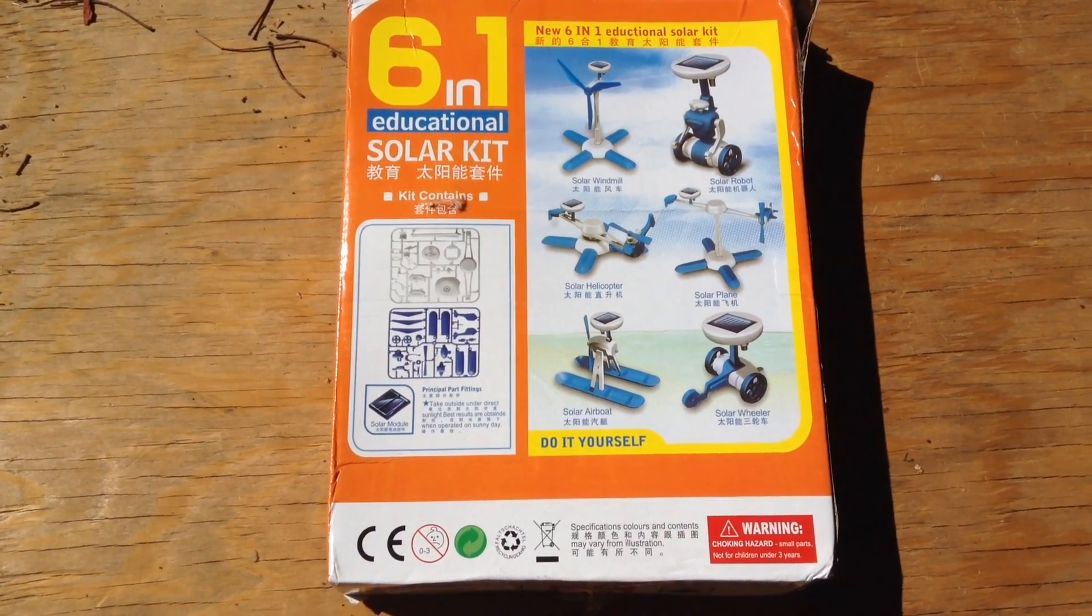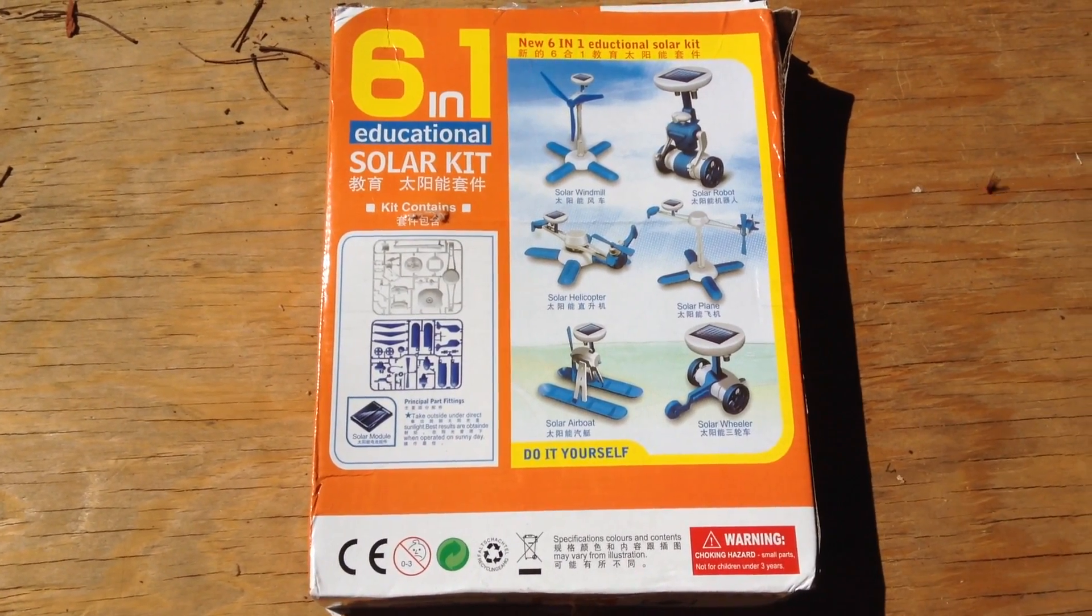This is the six-in-one educational solar kit from banggood.com. It's about ten bucks with free shipping.